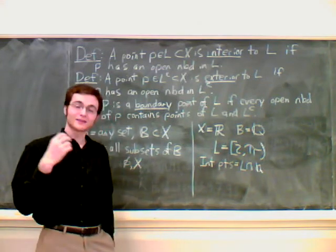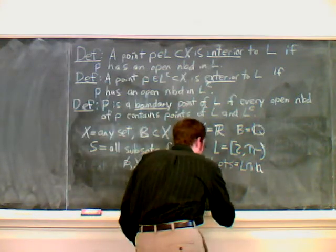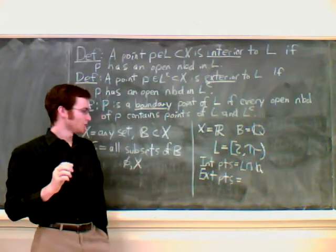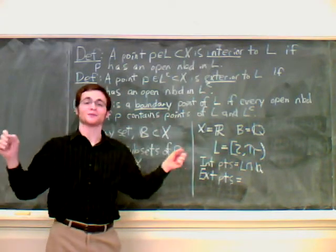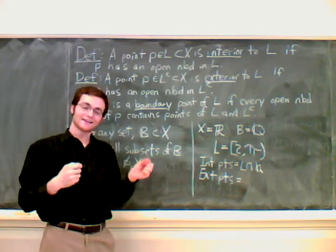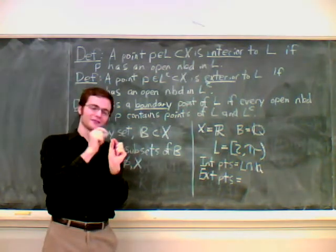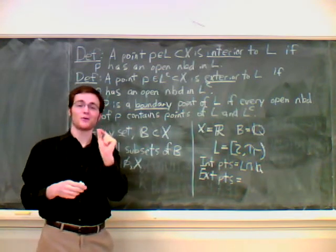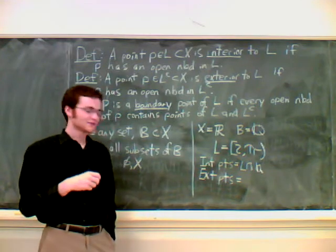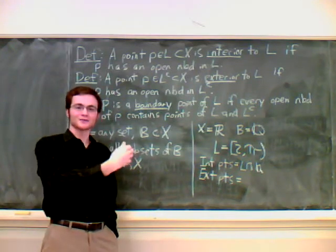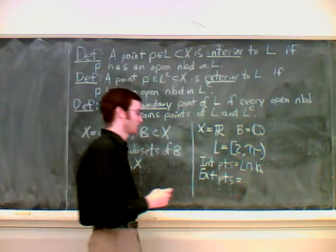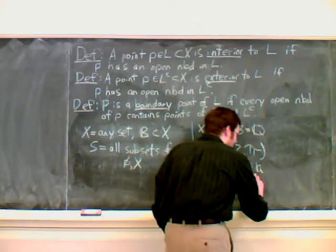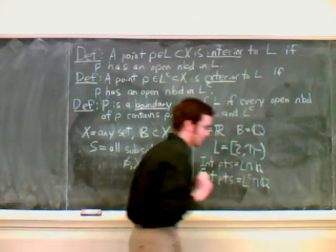Let's consider exterior points. For the exterior points, consider the rational points outside. Any rational point is of itself an open neighborhood of that point. For instance, {0} is the open neighborhood of 0. Anything that's outside our set is really outside our set, any rational point. So exterior points is L complement intersect the rational numbers.